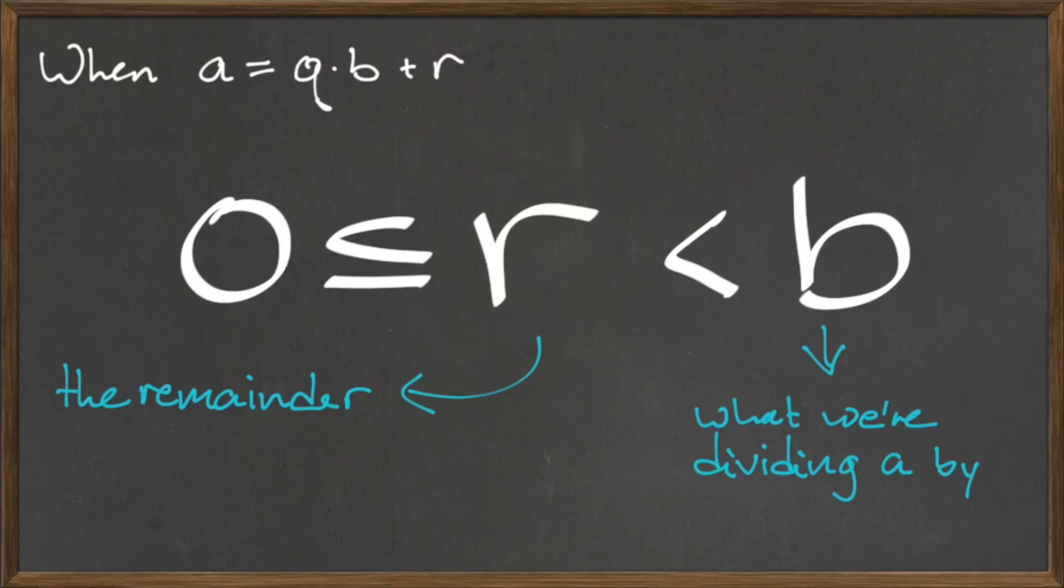The remainder r will always be bigger than or equal to 0, but must always be less than the number that we are dividing by, which in our case is b.